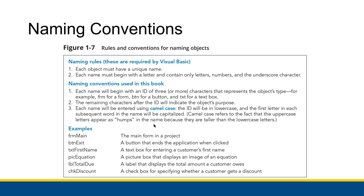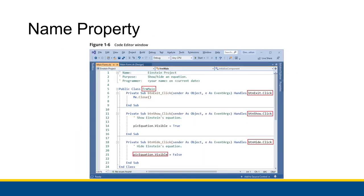The remaining characters will indicate the object's purpose. So FormMain is the main form of the entire program — that's usually what Main means in programming. ButtonExit means the Exit button, ButtonShow means the Show button, and PickEquation means the picture containing the equation E=MC², and so on.